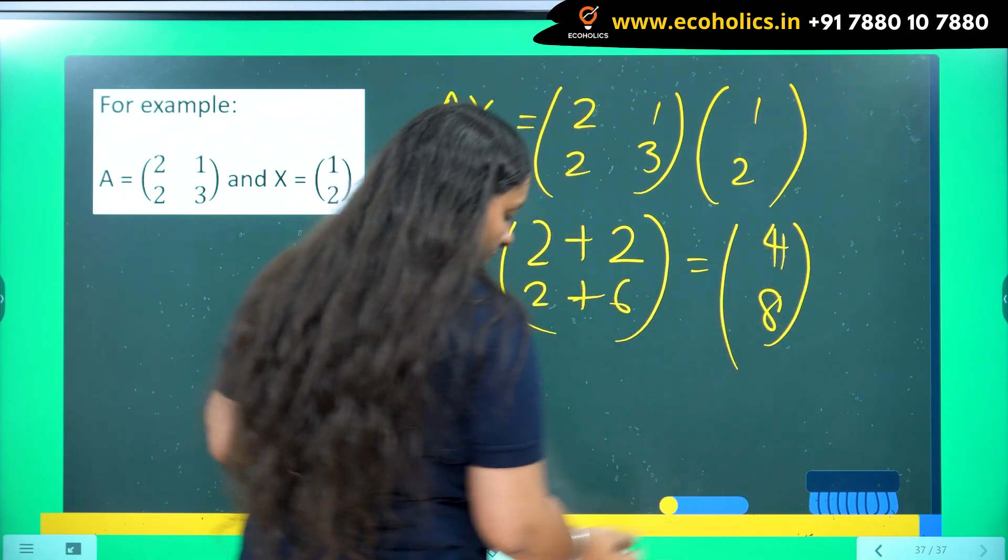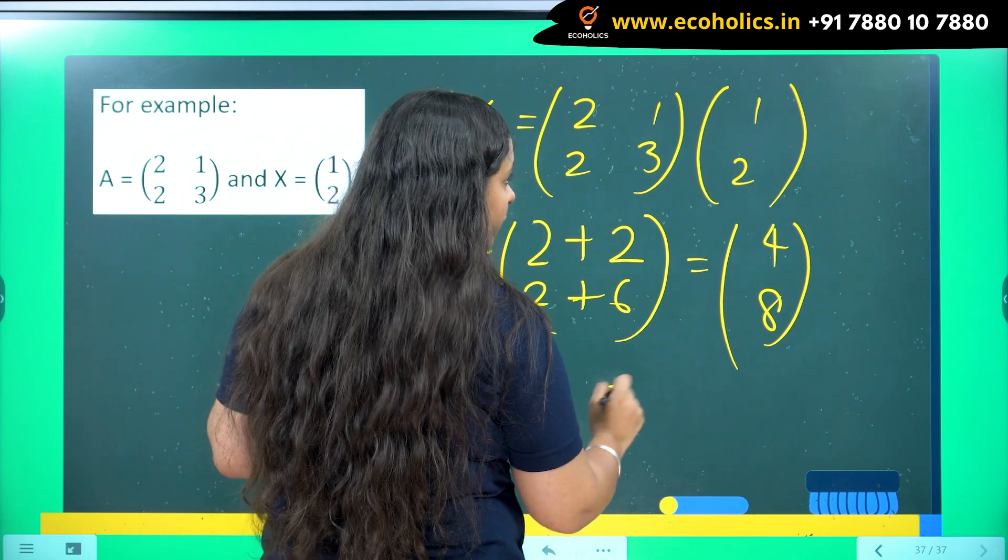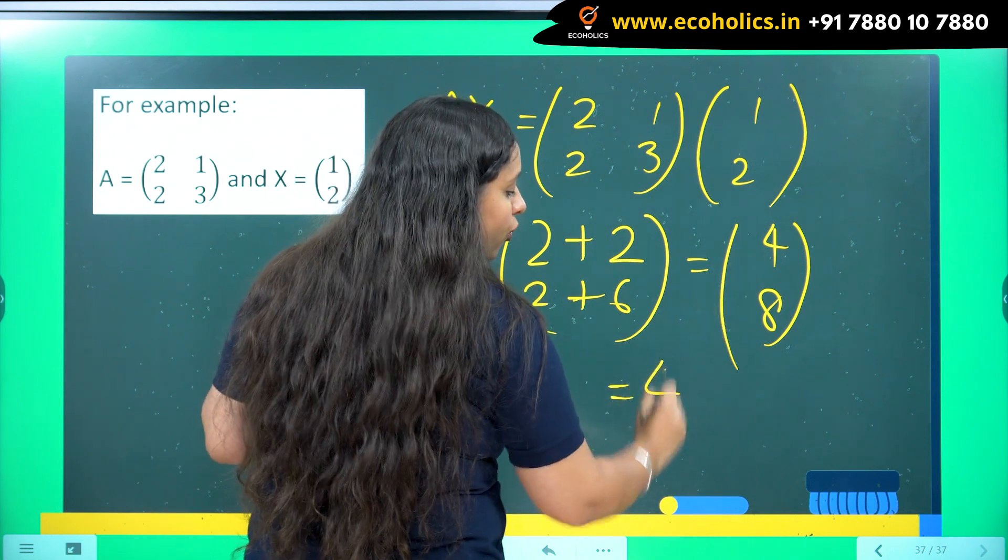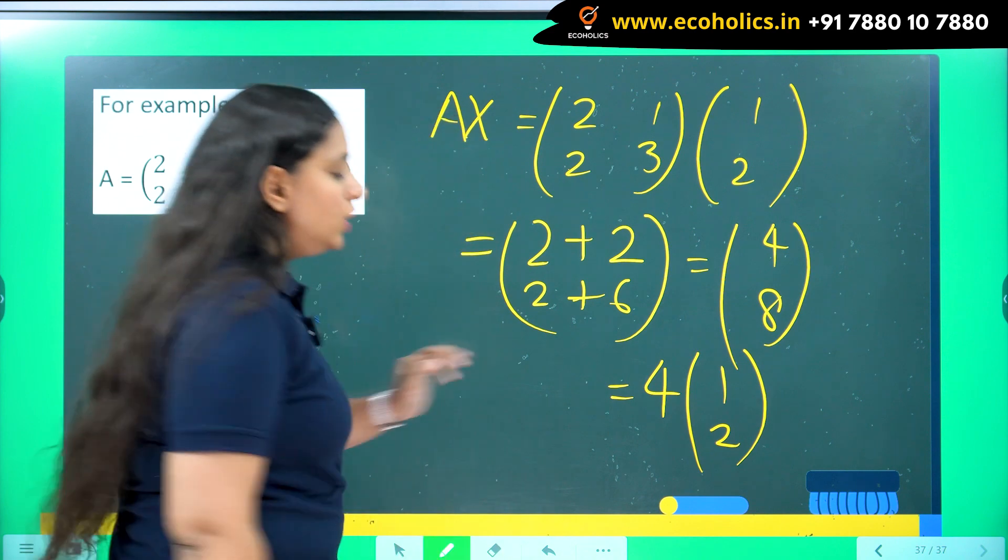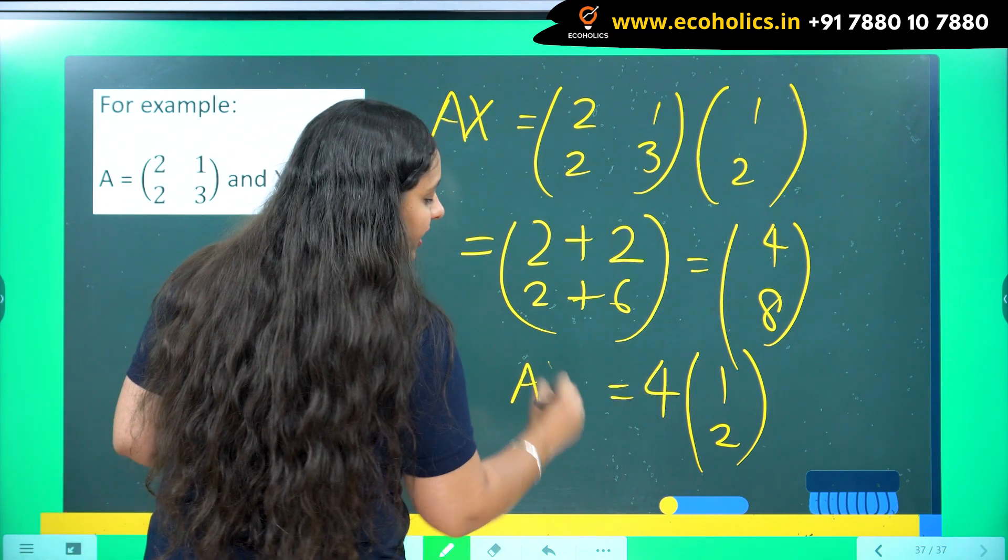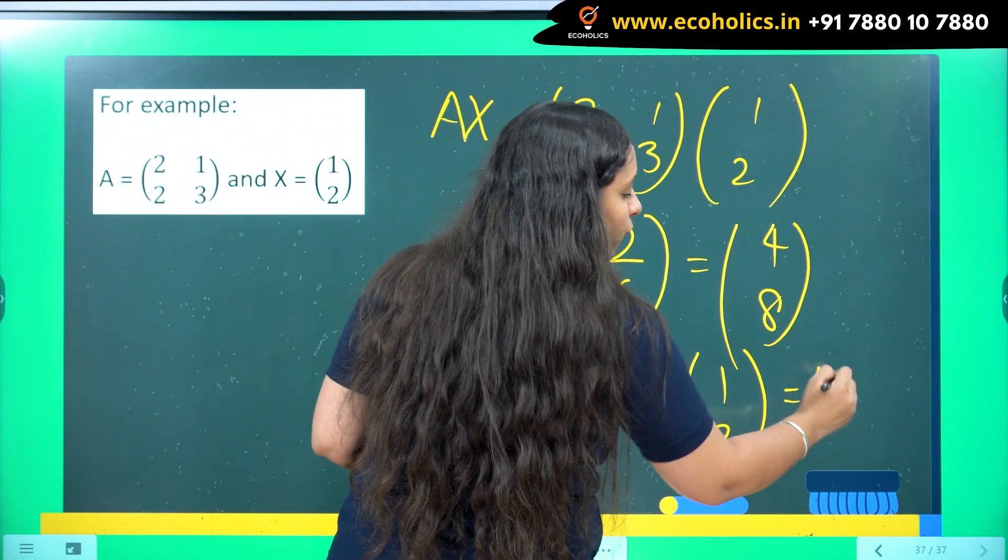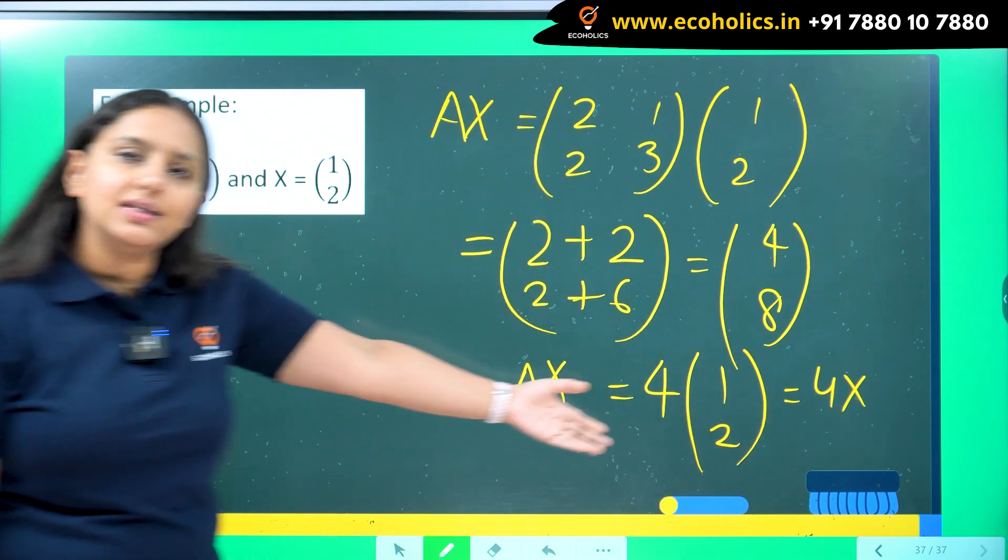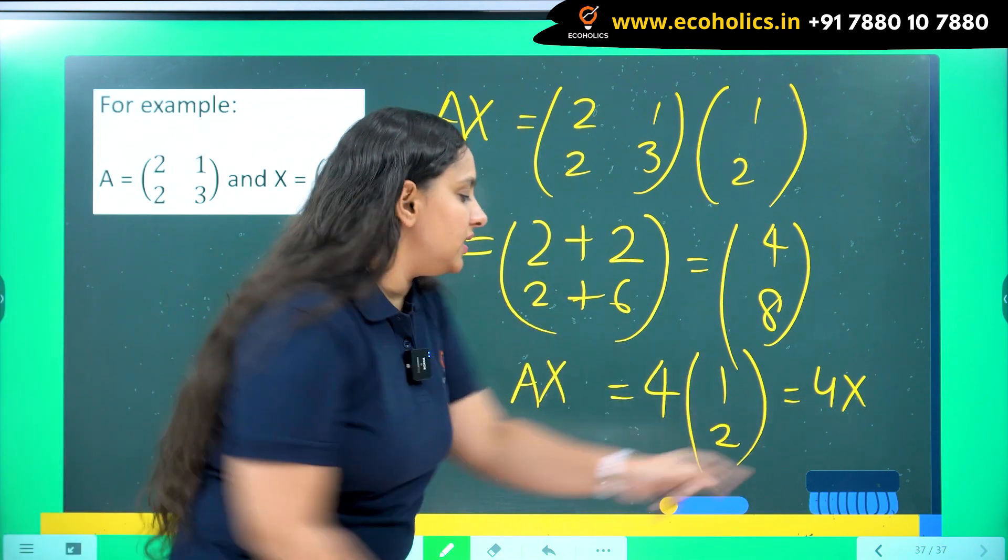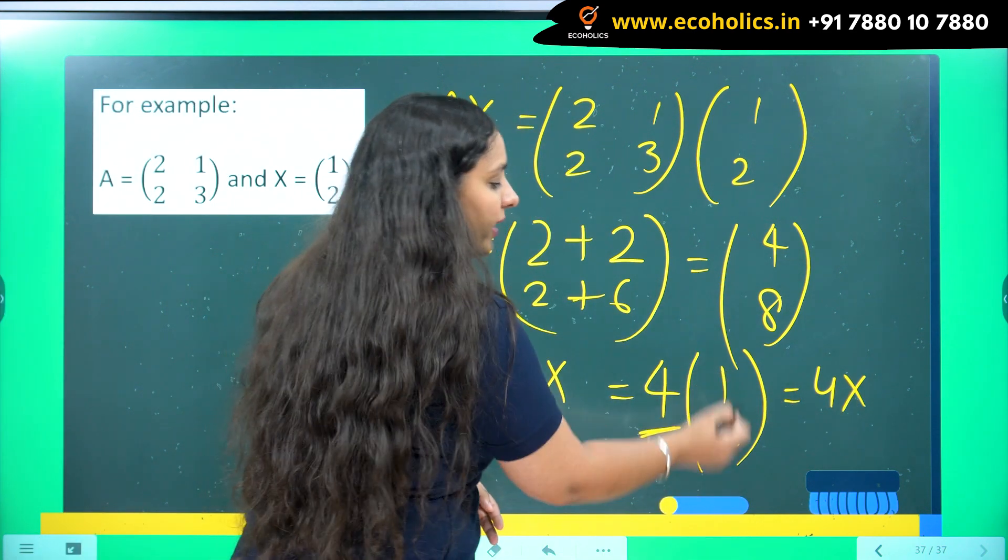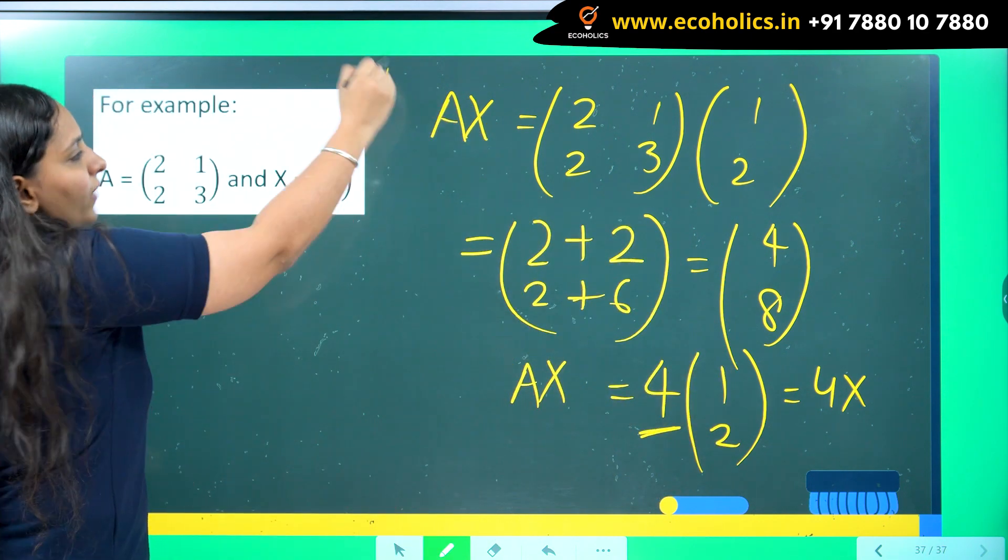So if you observe here, from here, if I take 4 common, I will be left with 1 and 2 again. So it means I have written AX equals to 4 into X very easily. So 4 is my eigenvalue here and 1, 2 is actually my eigenvector.